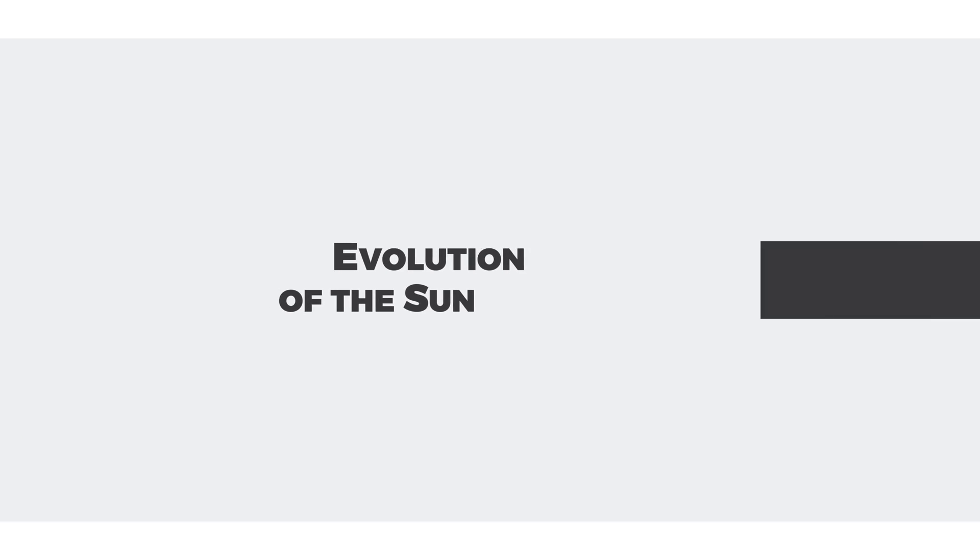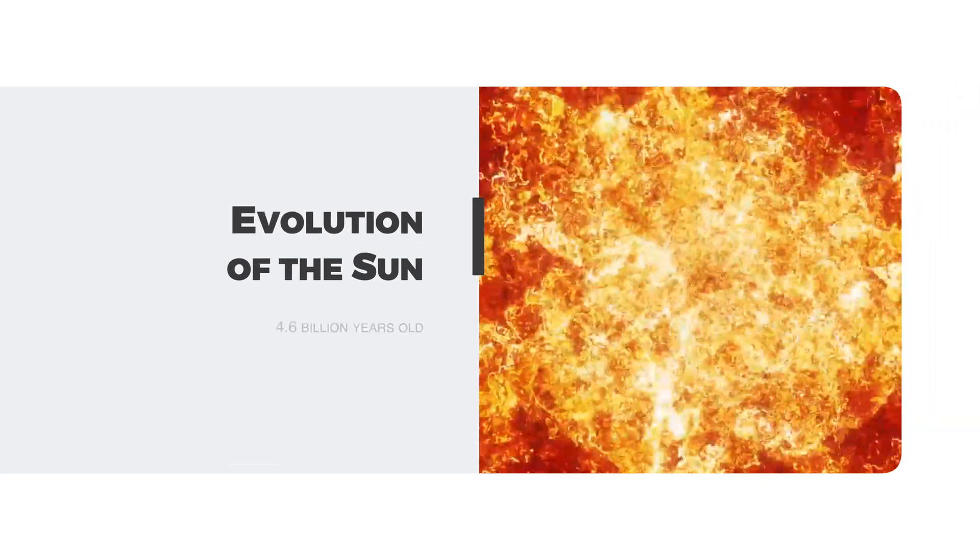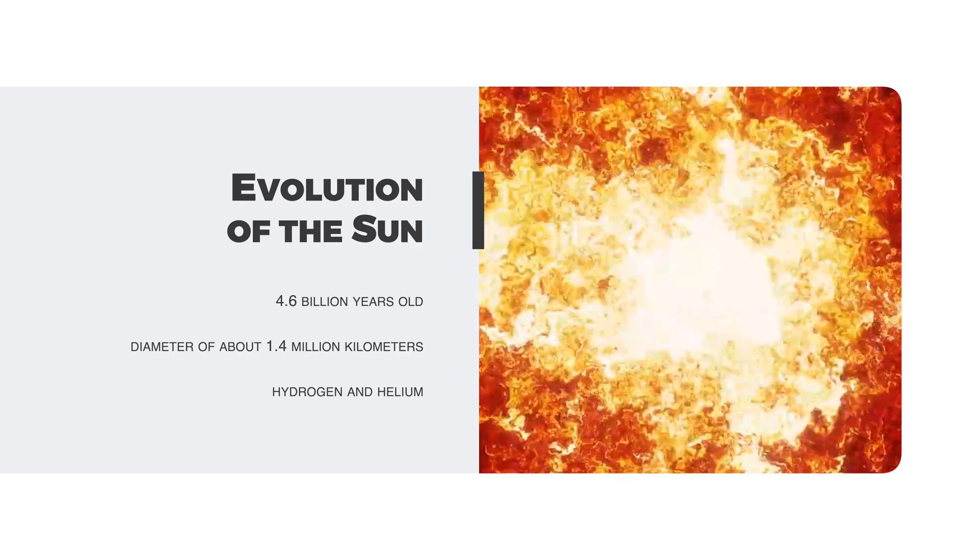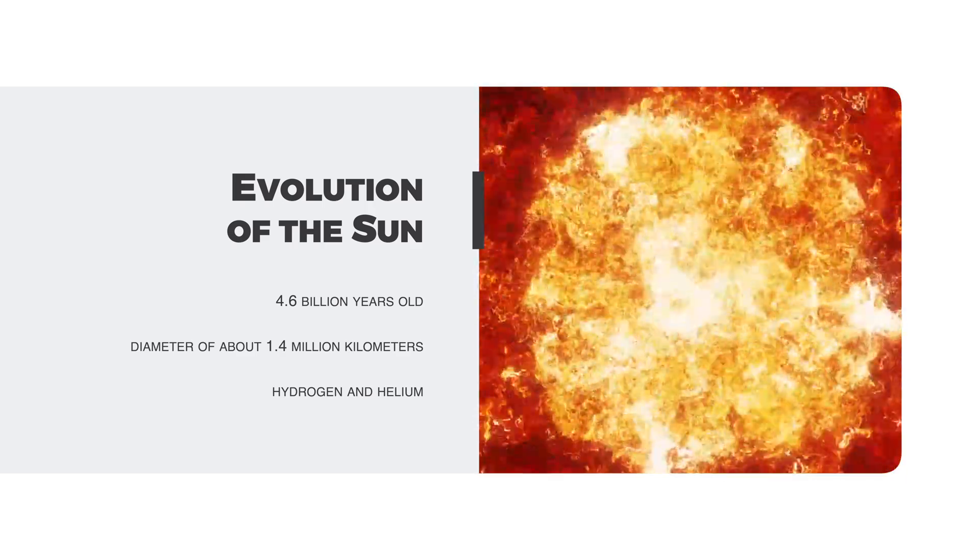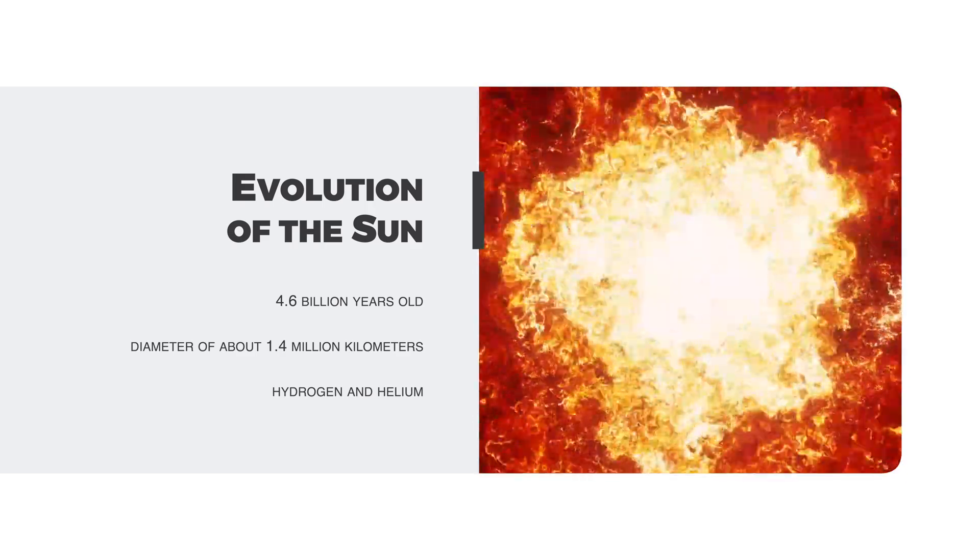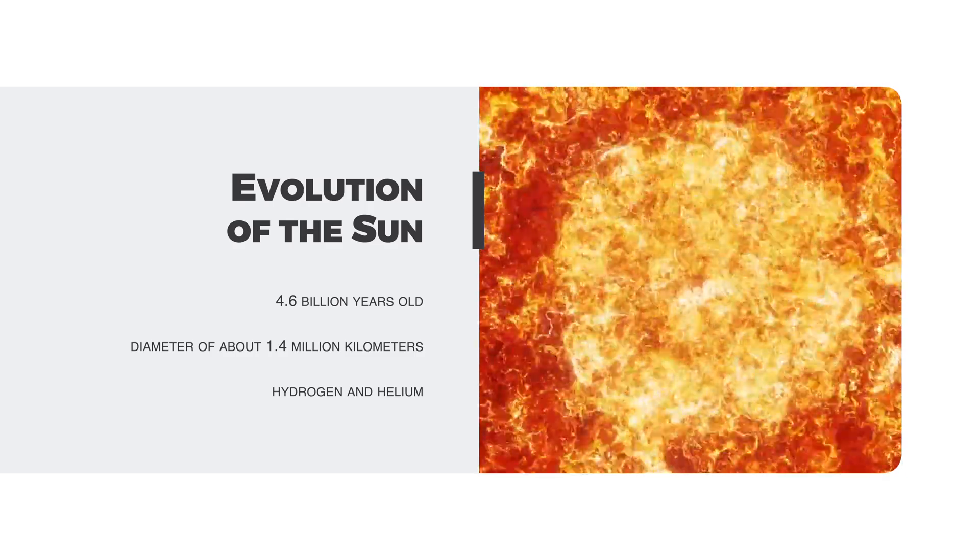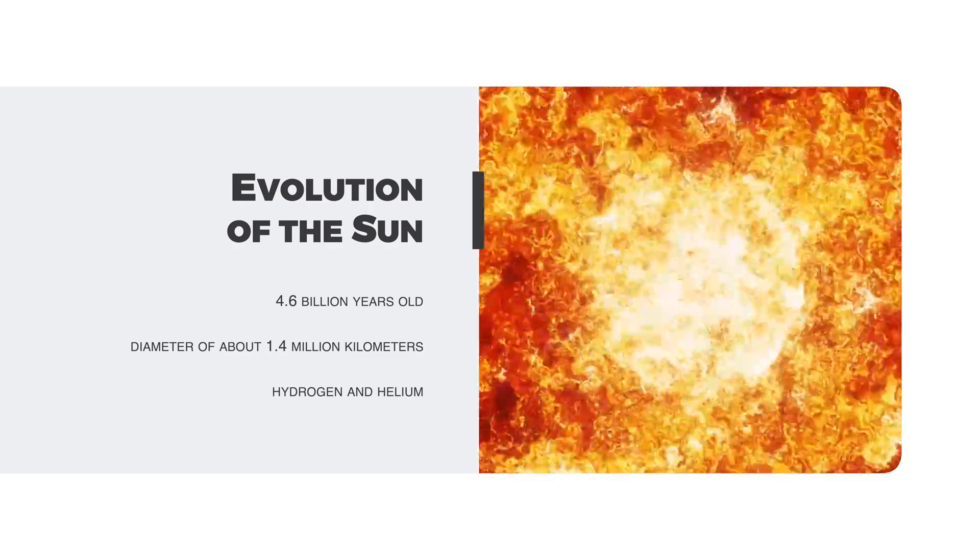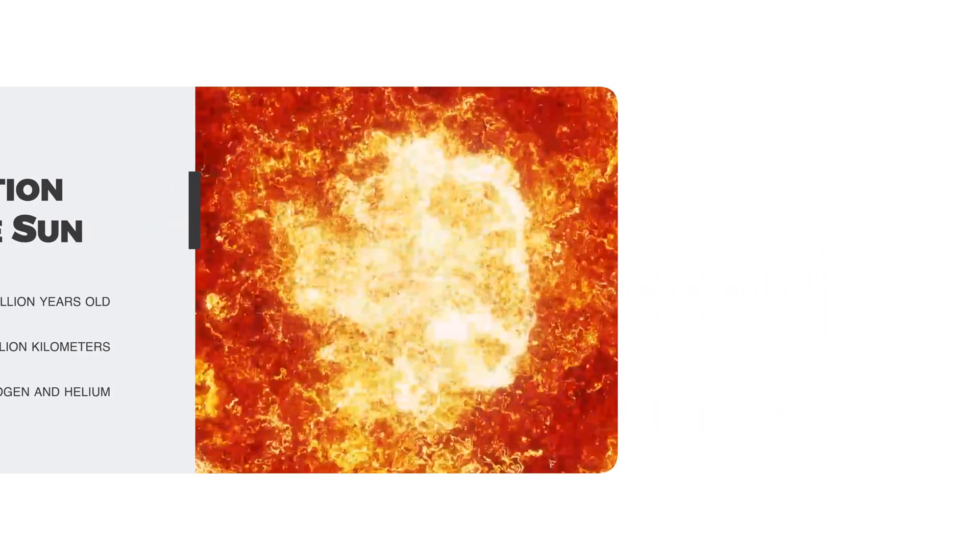The Sun is the star around which Earth and the other planets of our solar system revolve. It is about 4.6 billion years old and has a diameter of about 1.4 million kilometers. The Sun consists mainly of hydrogen and helium and produces energy through nuclear fusion.